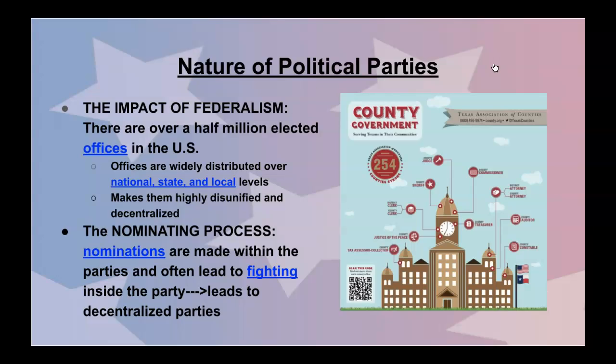Nominations are made within the parties and often lead to fighting inside the party, which leads to decentralized parties. For example, when Donald Trump was first running for the Republican primary, there were like 16 other candidates, creating a lot of chaos within the party because of so many choices. But over time, when there are just two choices for you to choose from at any level or tier of office, this makes voting a lot easier.